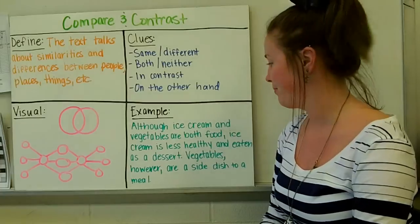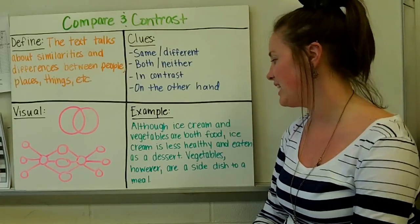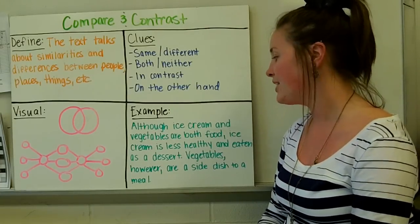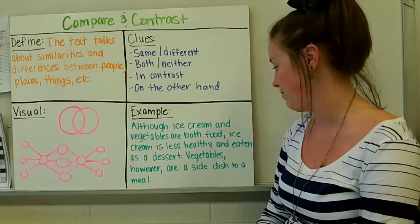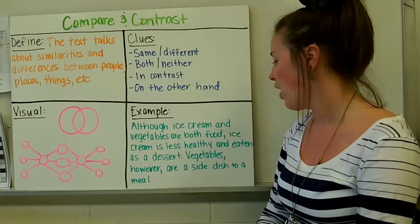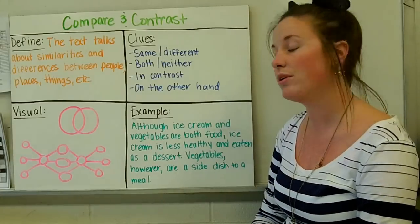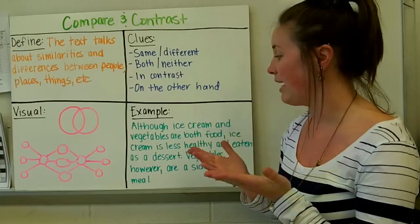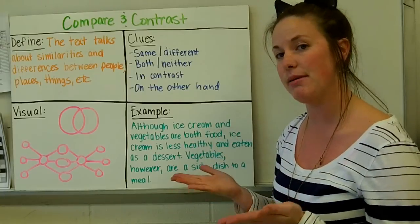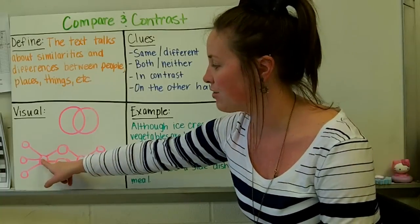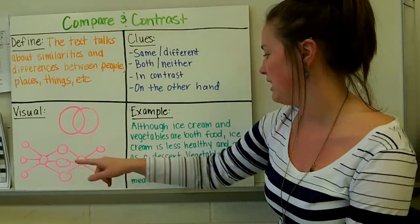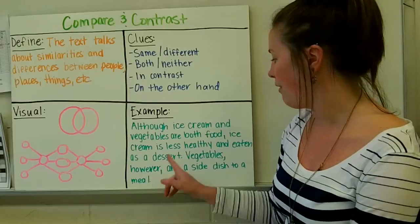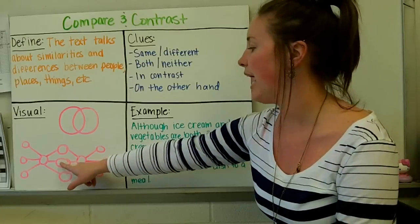So here's an example. Although ice cream and vegetables are both food, ice cream is less healthy and eaten as a dessert. Vegetables, however, are a side dish to a meal. So I could put, I would take both of my topics. So I have ice cream and vegetables. I would put ice cream in one circle, vegetables in the other. In the middle, I would put that they are both food. So that would go in the middle.